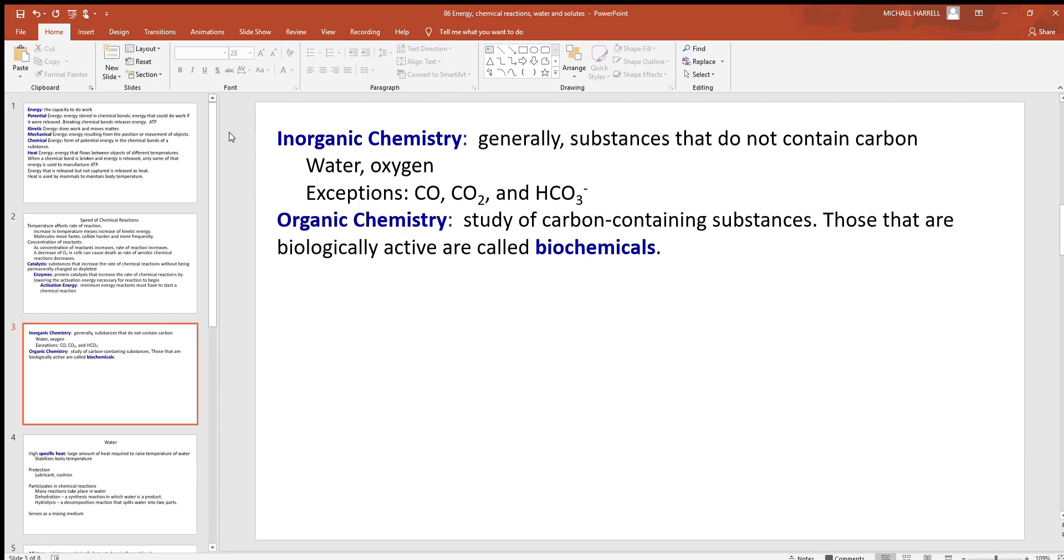Look also here at inorganic and organic chemistry. As a general rule, inorganic chemistry involves any substance that does not contain carbon, like water and oxygen. But there are three exceptions to that carbon rule. Carbon monoxide, carbon dioxide, and bicarbonate ion are exceptions. Those three things do have carbon, but they go under inorganic. Anything else which has carbon in it will go under organic chemistry. So we're going to be looking at a lot of organic chemistry throughout this text.